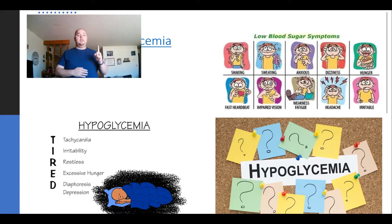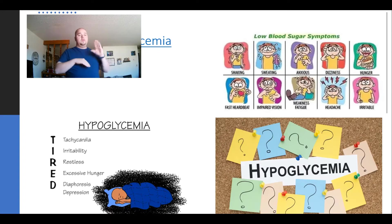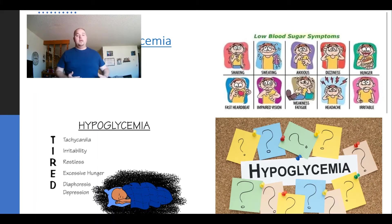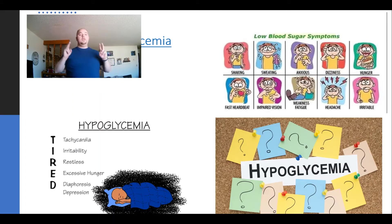It all comes down to how they absorb the sugar using insulin. Type 1 diabetes is insulin deficient — the pancreas is not creating enough insulin. Insulin is the key that goes into the door, unlocks it, and allows sugar to enter the cell for energy. In type 2 diabetes, we have insulin resistance that stops the insulin key from getting in, so the sugar continues to circulate around the bloodstream.